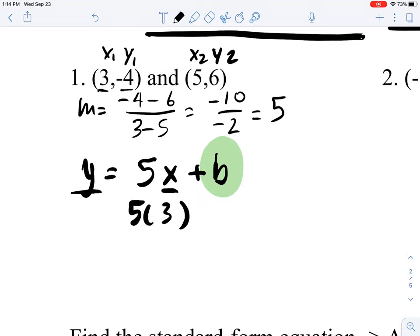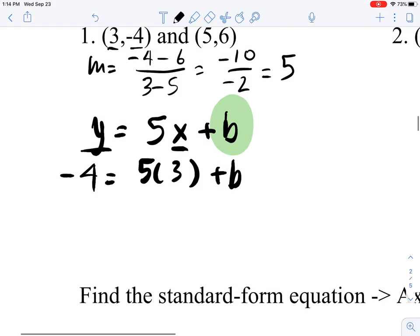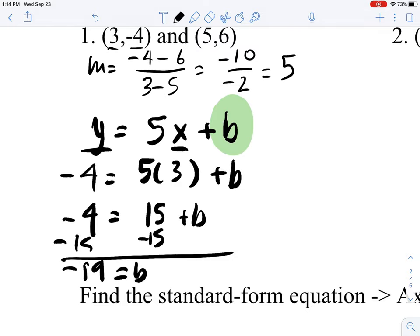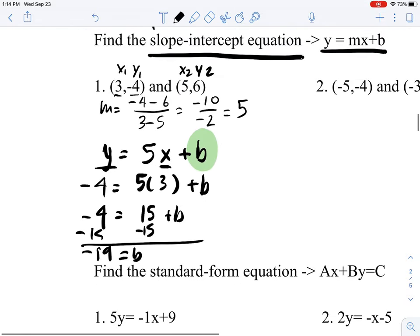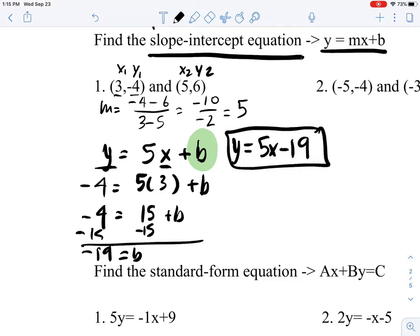5 times 3 equals negative 4 plus b. Now 15 plus b equals negative 4. Subtract 15 on both sides, and you get negative 19 equals b. Now you know that the equation is actually y equals 5x minus 19. That's your equation.